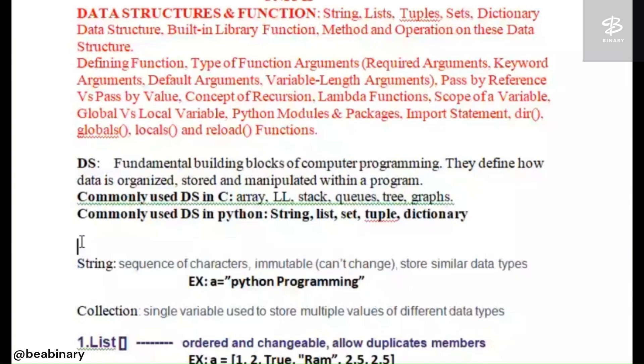A string is a sequence of characters. I have written an example: A equals 'python programming'. This means A is a variable name where 'python programming' is a sequence of characters.